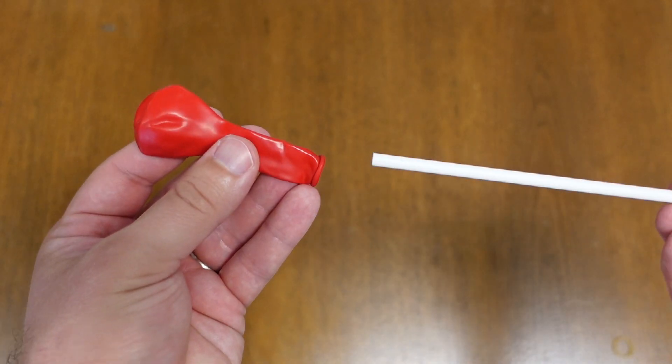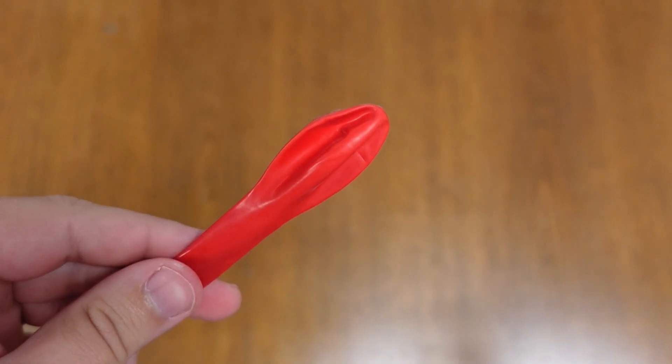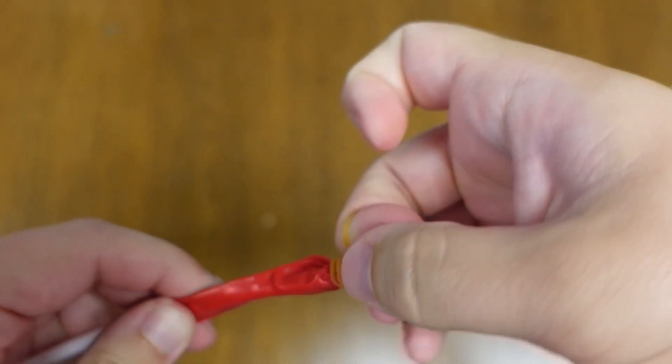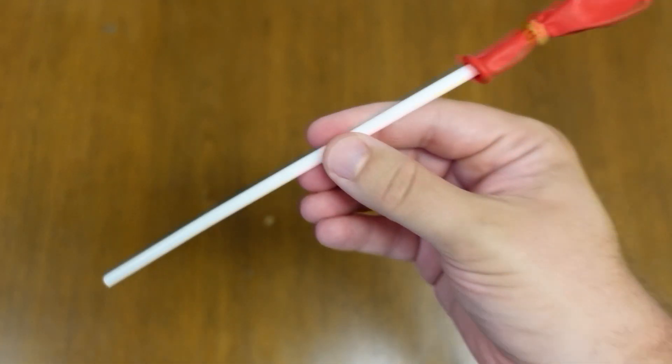Next, assemble your balloon straw propeller by inserting the long straw into the opening of the balloon. Then, triple wrap the rubber band to seal the balloon opening around the straw. You may want to slide the balloon further down the straw after the rubber band is attached.